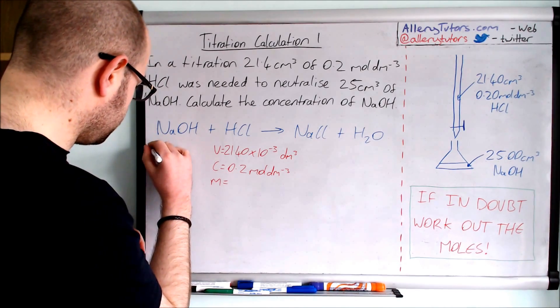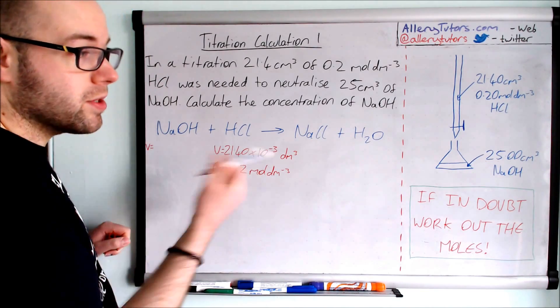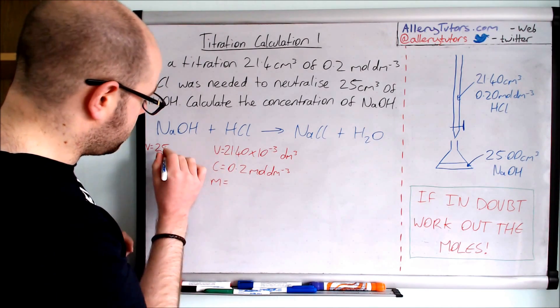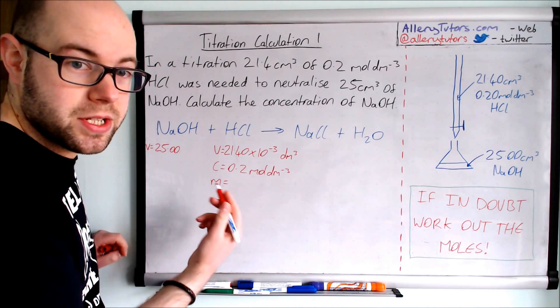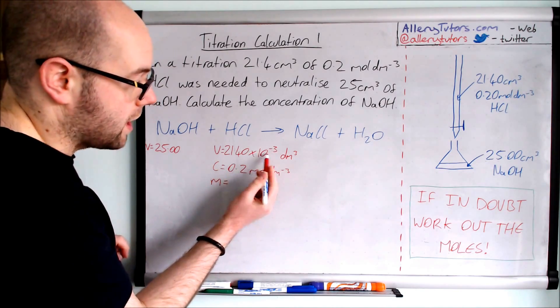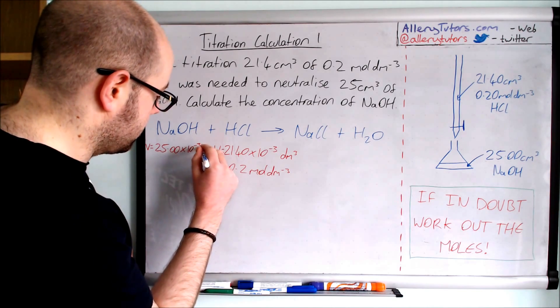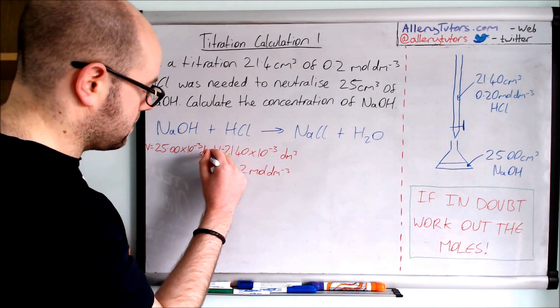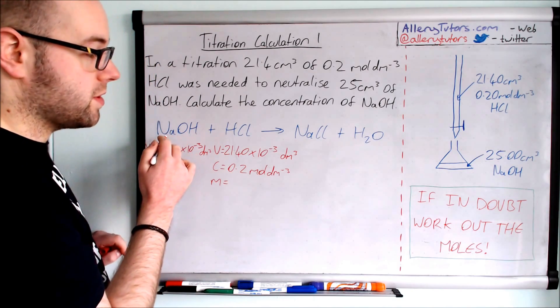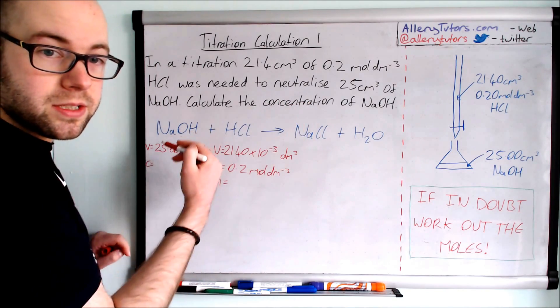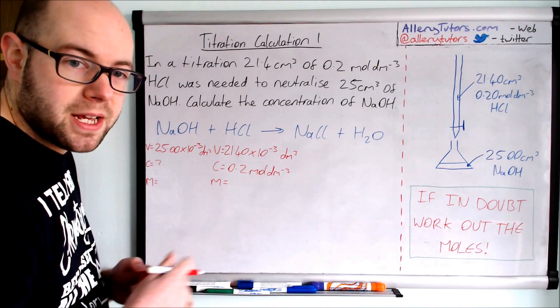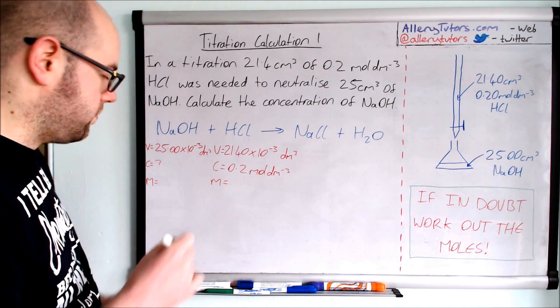We're going to do exactly the same for sodium hydroxide. The volume of sodium hydroxide is 25 centimeters cubed, or 25.00 to keep two decimal places consistent. We need to divide by a thousand to get it into decimeters cubed, so times by 10 to the minus 3. The concentration of sodium hydroxide we don't know—that's what we need to work out. And moles we will work out in a minute.